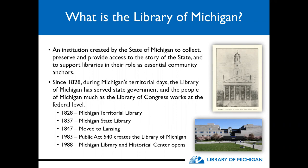Eventually in 1983, Public Act 540 created the Library of Michigan. We transitioned from being the Michigan State Library to the Library of Michigan, in part to further model ourselves after the Library of Congress, and also to transition away from a name that would have similarities to Michigan State University's libraries, which is just down the road from us in East Lansing. In 1988 the Michigan Library and Historical Center opened.